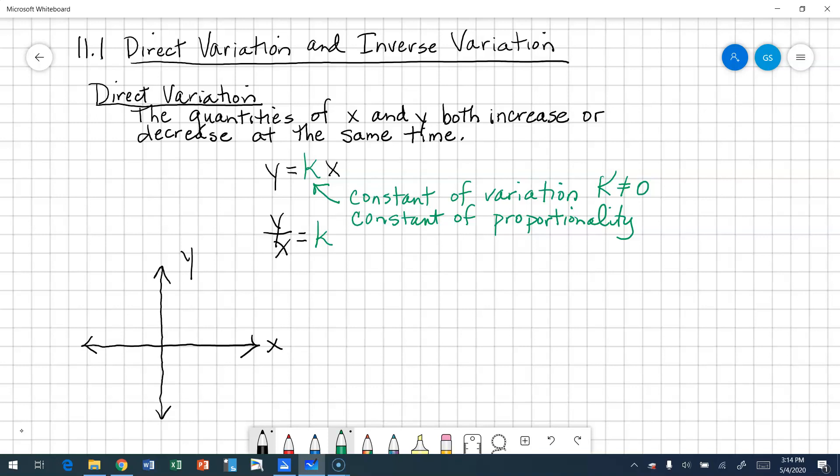I'm just going to sketch this. If I have y is equal to kx and k is greater than 0, it means that I have a positive slope. And my line looks like that. If you notice, my k is equal to my slope.